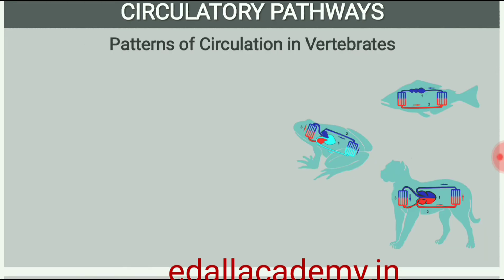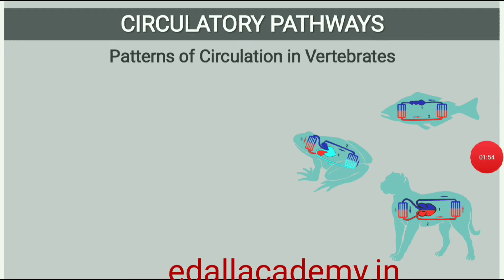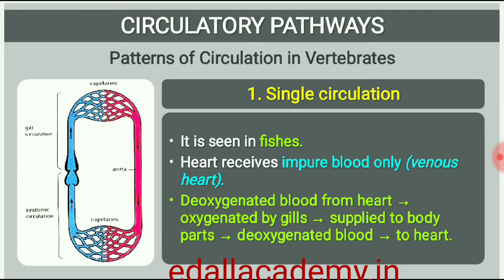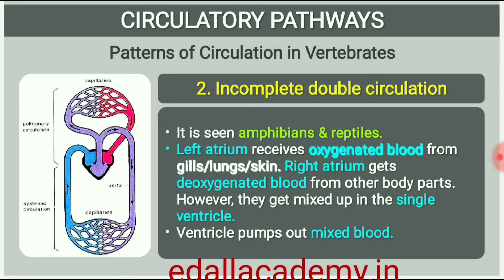Fishes have a two-chambered heart with an atrium and a ventricle. Amphibians and the reptiles, except crocodiles, have a three-chambered heart with two atria and a single ventricle, whereas crocodiles, birds and mammals possess a four-chambered heart with two atria and two ventricles. In fishes the heart pumps out blood which is oxygenated by the gills and supplied to the body parts from where the deoxygenated blood is returned to the heart, single circulation. In amphibians and reptiles, the left atrium receives oxygenated blood from the gills/lungs/skin and the right atrium gets the deoxygenated blood from other body parts. However, they get mixed up in the single ventricle which pumps out mixed blood, incomplete double circulation.